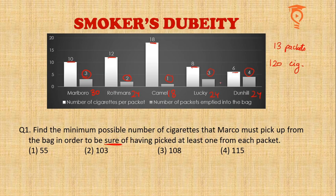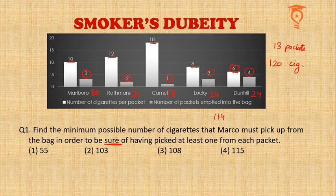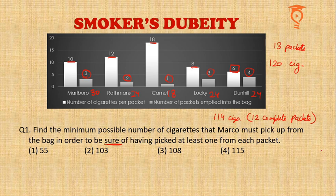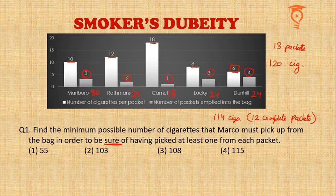For the worst case, the minimum number of cigarettes in any single packet is six. So what if I've picked 114 cigarettes covering 12 complete packets — a very rare but still possible scenario where one packet remains untouched? The moment I pick the 115th cigarette, I am sure I have touched the last packet too. So the answer to question 1 is 115.